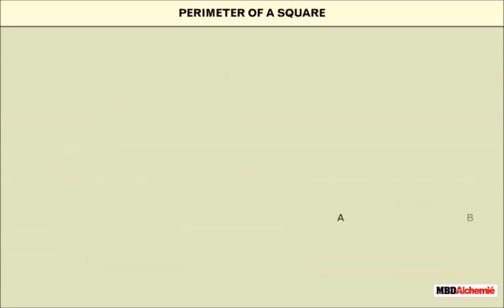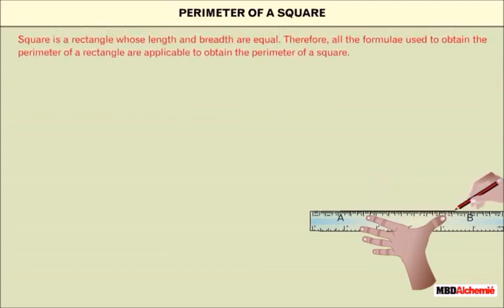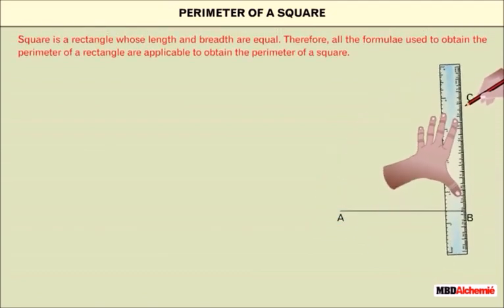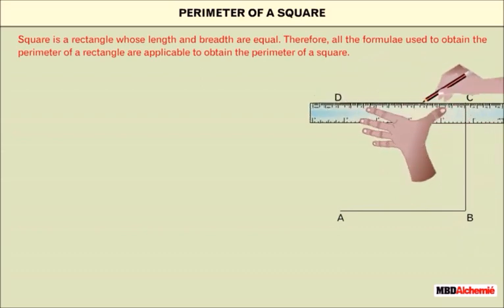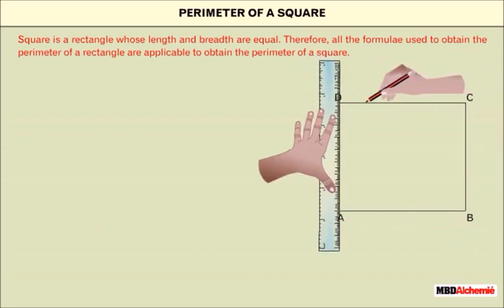Here we will learn about the perimeter of a square. Square is a rectangle whose lengths and breadth are equal. Therefore, all the formulae used to obtain the perimeter of a rectangle are applicable to obtain the perimeter of a square.